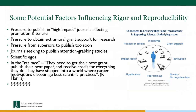Some potential factors influencing rigor and reproducibility: pressure to publish in high-impact journals, which affects promotion and tenure; pressure to obtain extramural grant support; pressure from superiors to publish too soon; journals seeking attention-grabbing studies; and scientific ego. As Richard Harris writes in 'Rigor Mortis': scientists need to get their next grant, publish their next paper, receive credit for everything they do. They've stepped into a world where career motivations discourage best scientific practices.